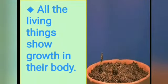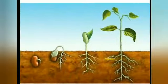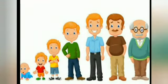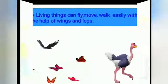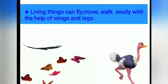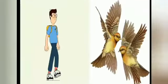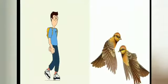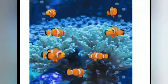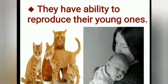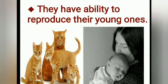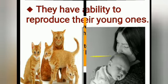All living things show growth in their body. Living things can fly, move, and walk easily with the help of wings and legs. They have the ability to reproduce their young ones. These are the characteristics of living things.